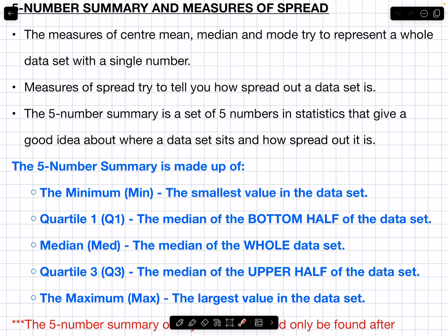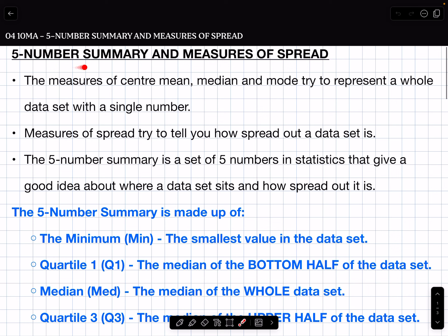Hey guys, Mr. T here, just doing a quick video on the five number summary and measures of spread. The measures of center that we've dealt with — the mean, the median, and the mode — try to represent a whole data set with a single number. Now we need to deal with the idea of measures of spread. They try to tell you how spread out a data set is. The intention is that you can talk about the positioning of a data set based on measures of center, and you can tell the consistency of a data set by talking about measures of spread.